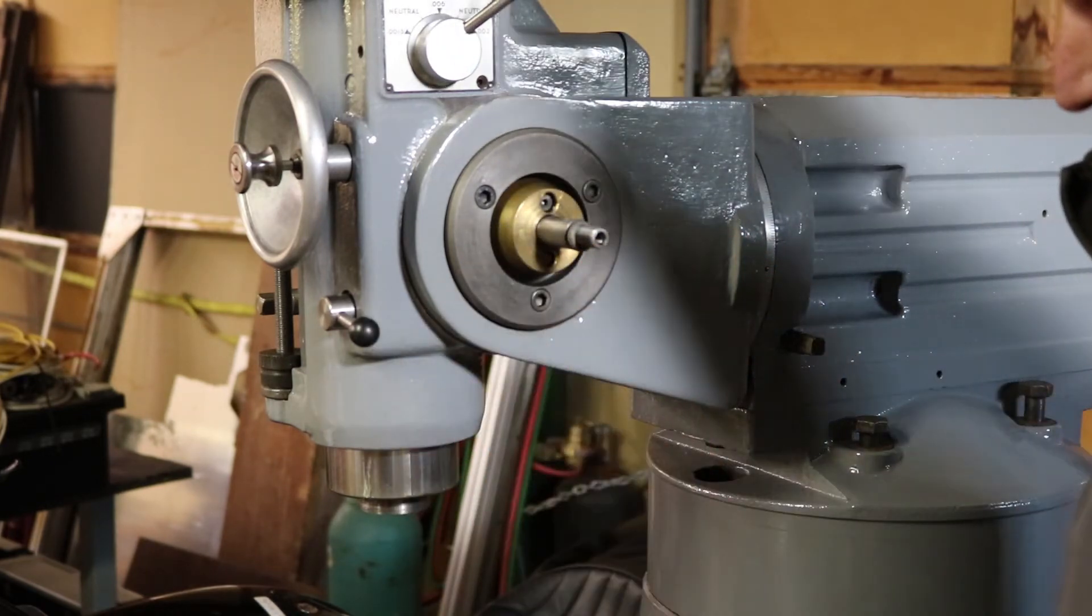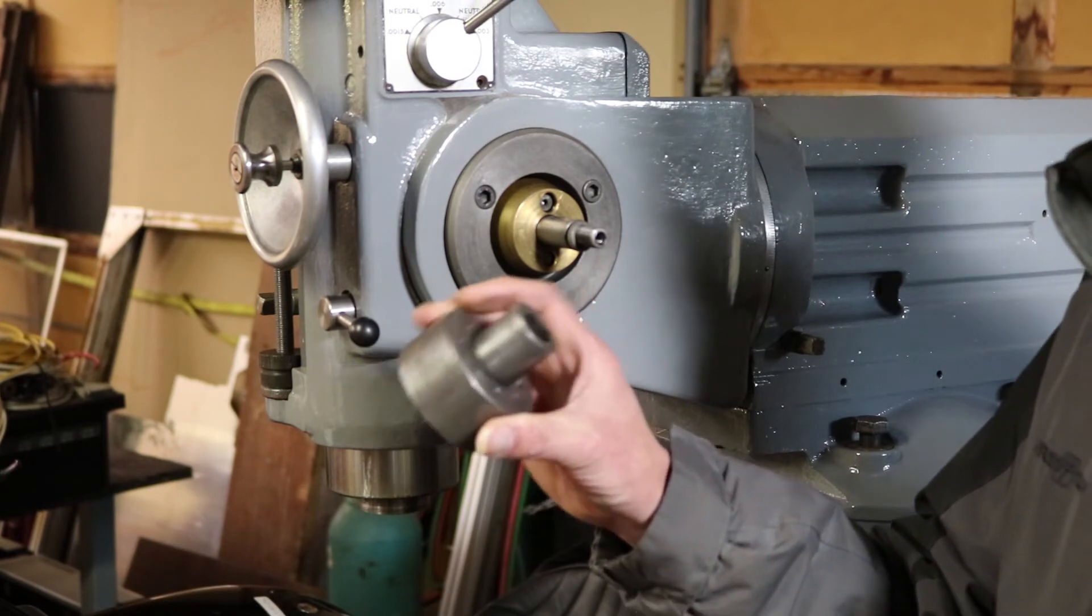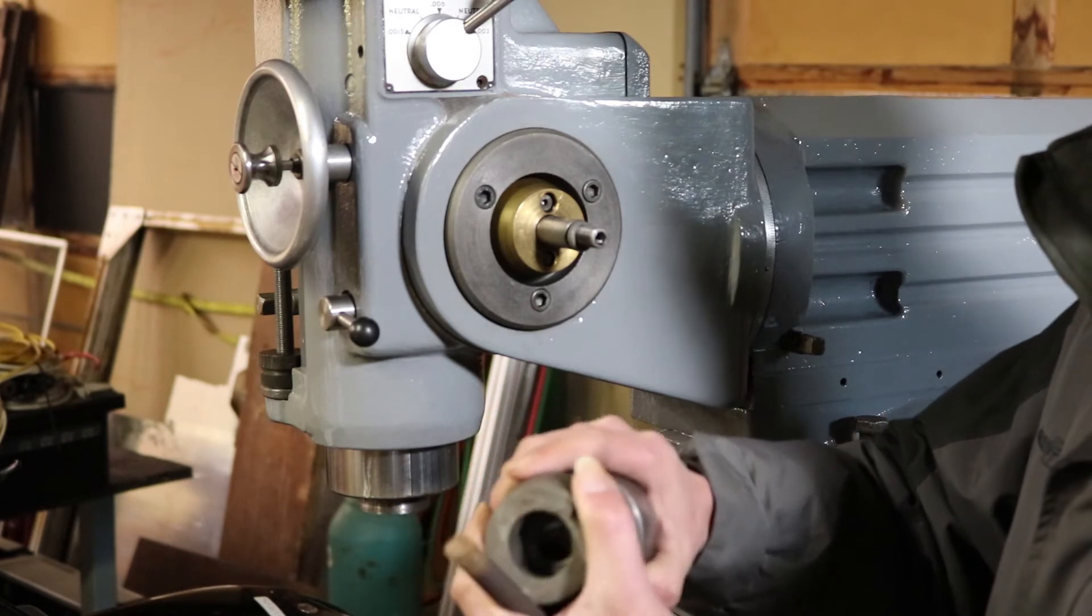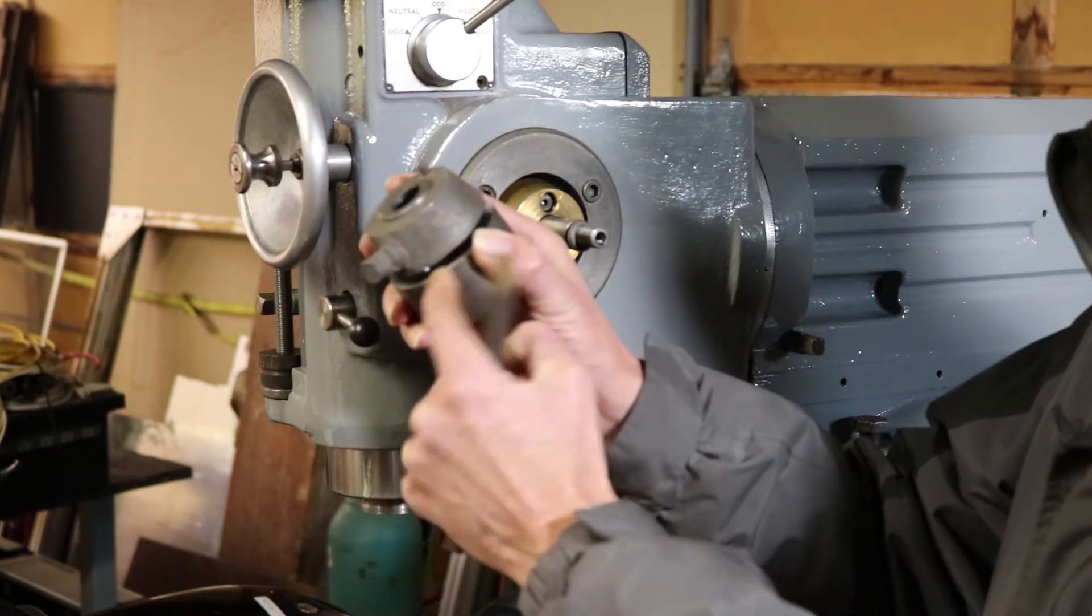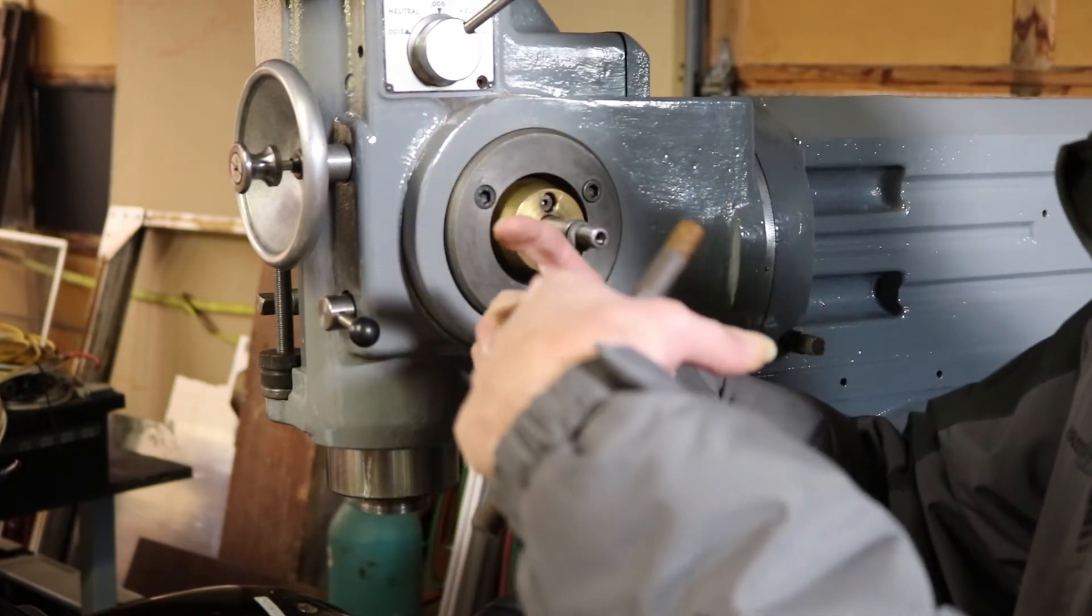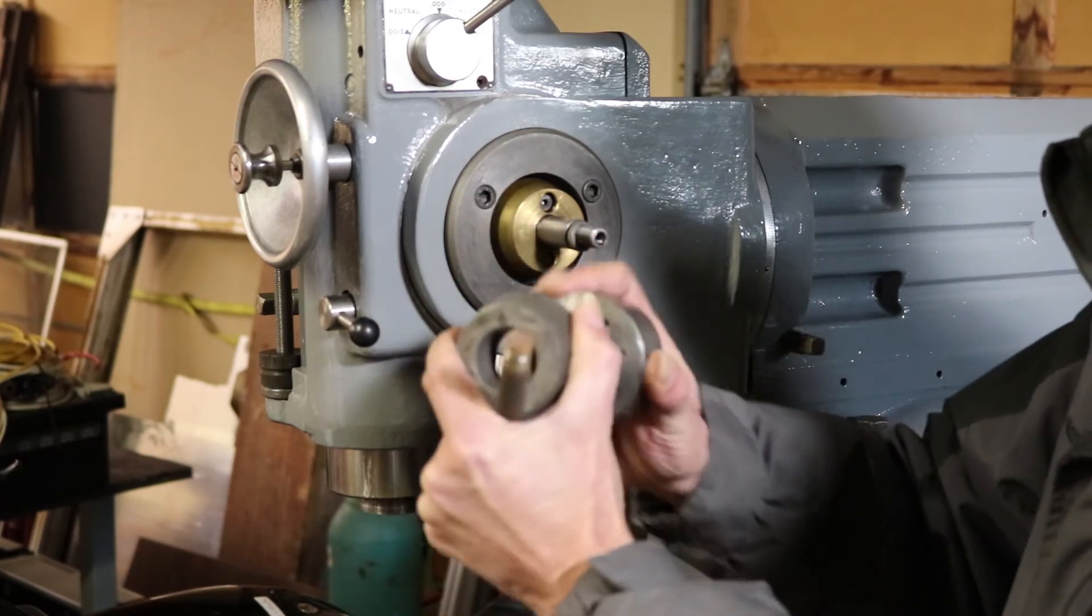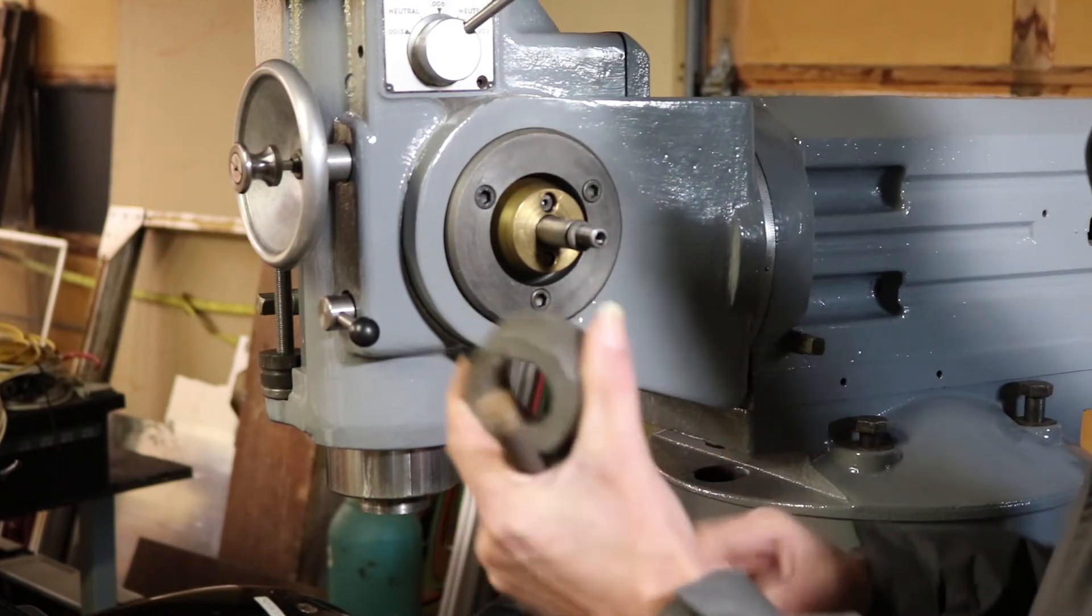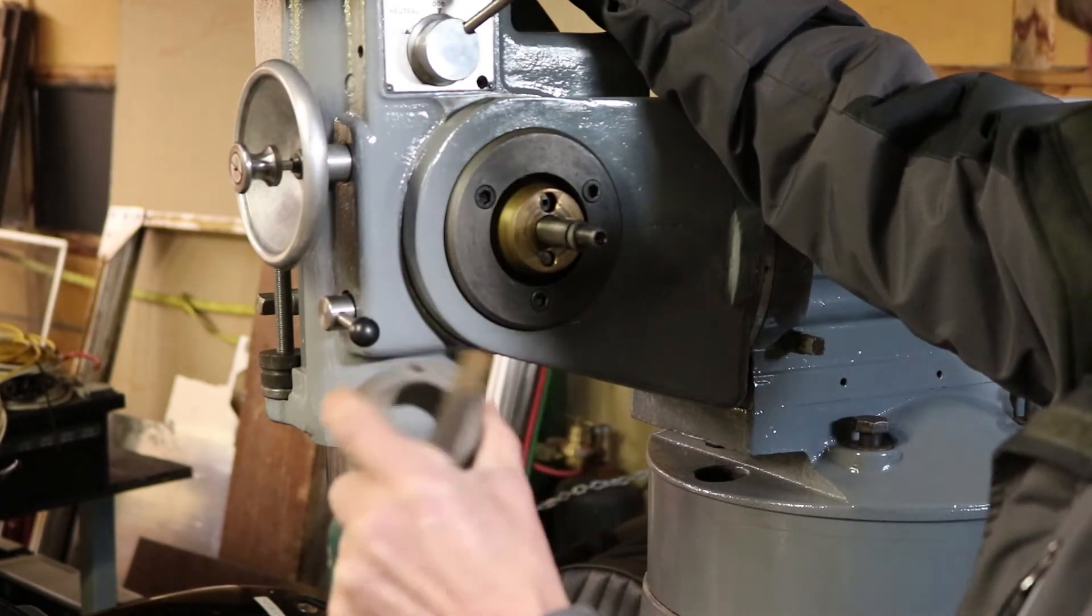Once I got this part of the clutch off and I had enough space to get some plates in here between the two, I was able to push the clutch out of the collar. I did that with a hydraulic press, a small hydraulic press.